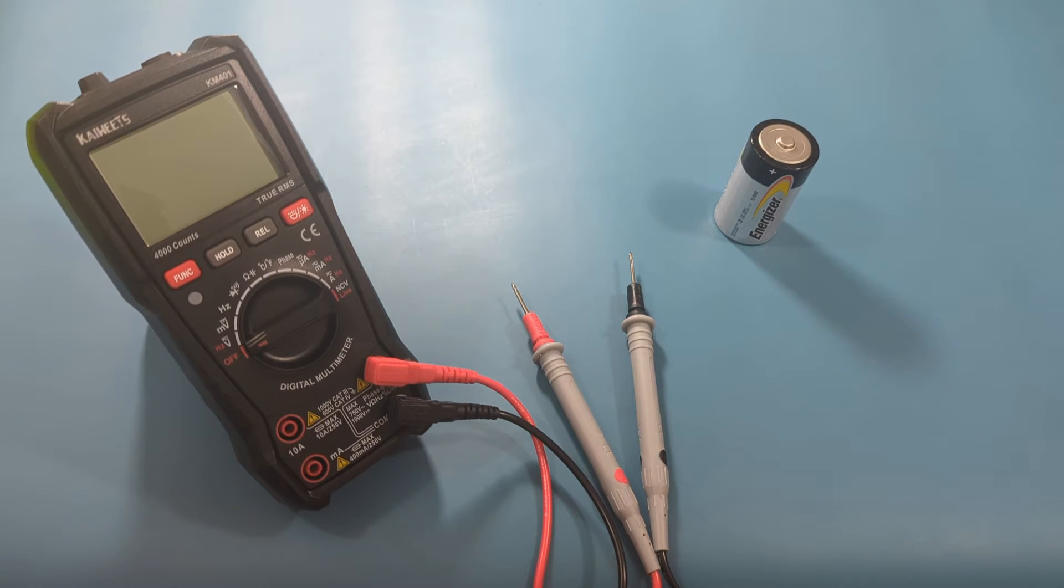Turn the dial to the voltage setting. It is the one with the squiggly line on top of the letter V.